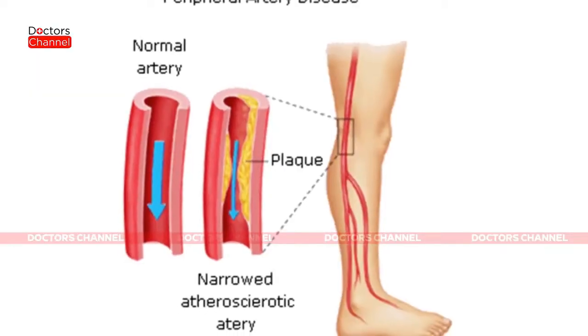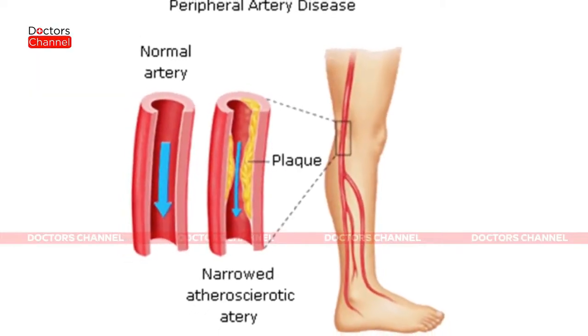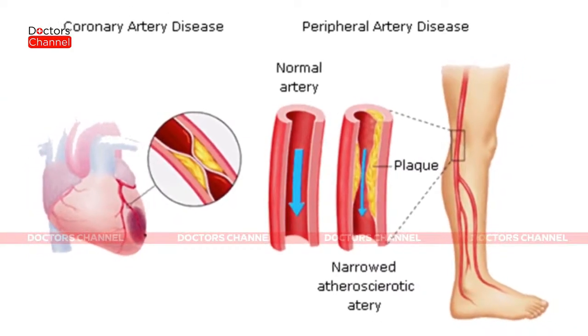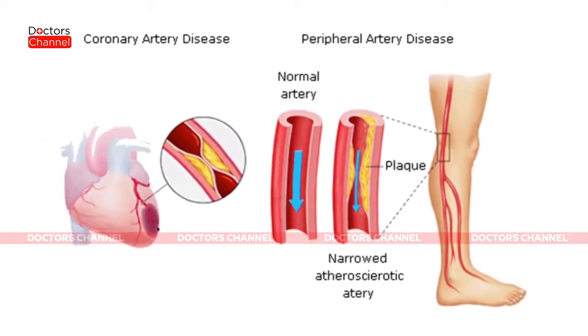Peripheral arterial disease is the blockage of the blood vessels, specially of the lower legs. The blockage can be at the groin level, the thigh level, the knee, or below the knee. The most common cause is atherosclerosis — the deposition of cholesterol, calcium, and similar substances in the blood vessels.